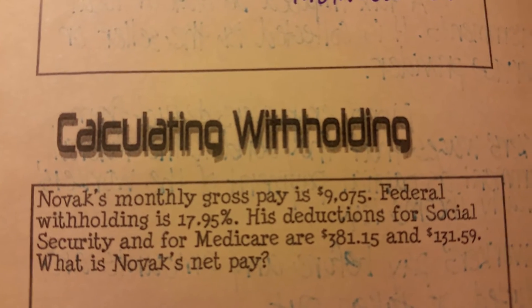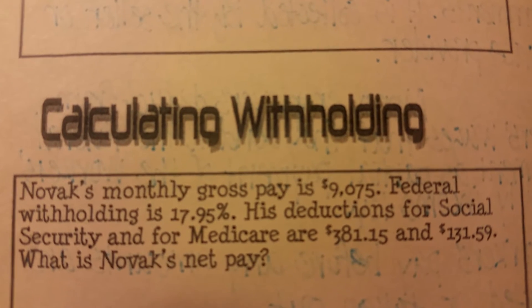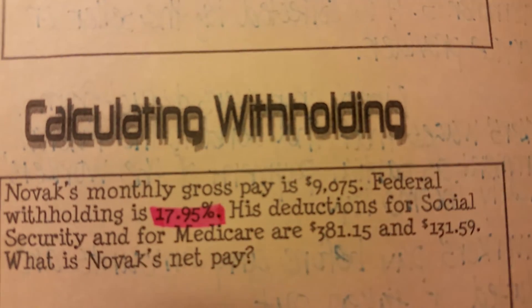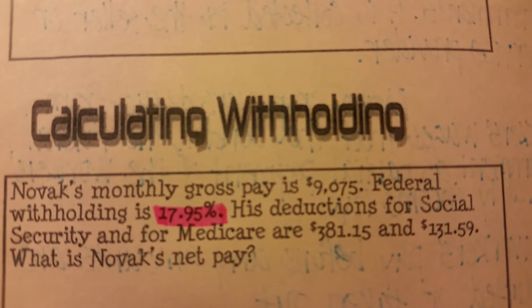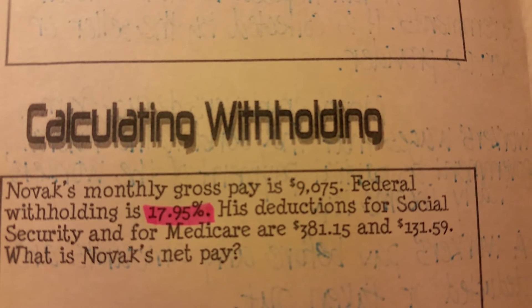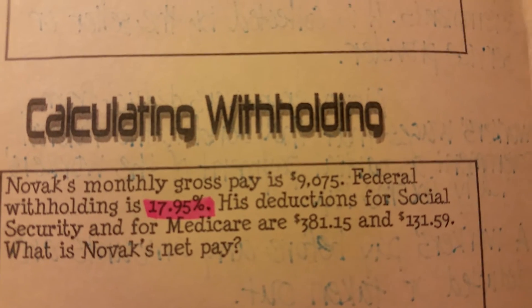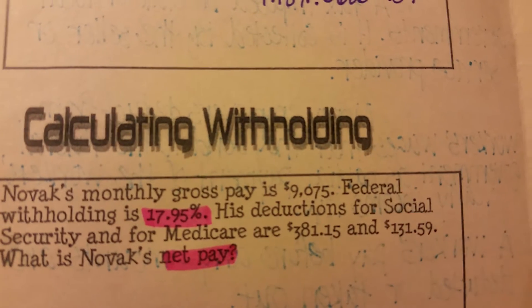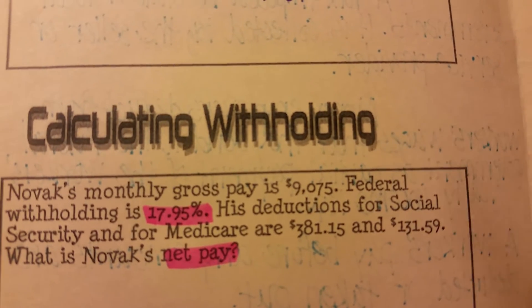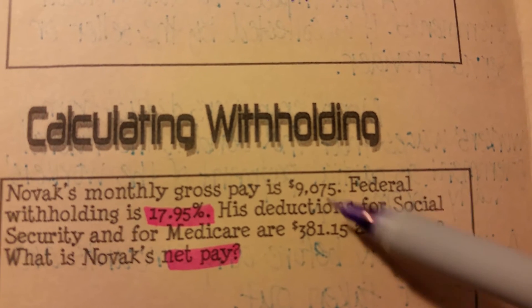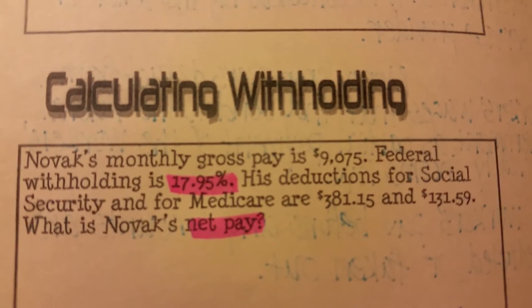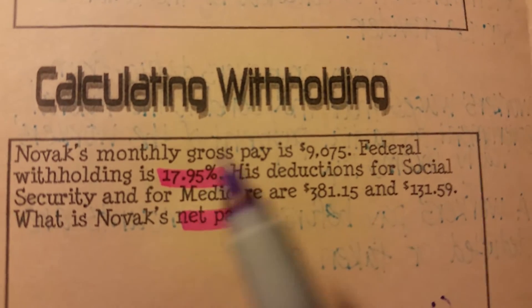Novak has a monthly gross pay of $9,075. His total withholding is 17.95%. His deductions for Social Security and Medicare are $381.15 and $131.59. We want to find his net pay. We have his gross pay — how much he makes a month — but the federal government has to take their part as well. We're going to subtract withholding from gross pay to see how much he takes home.